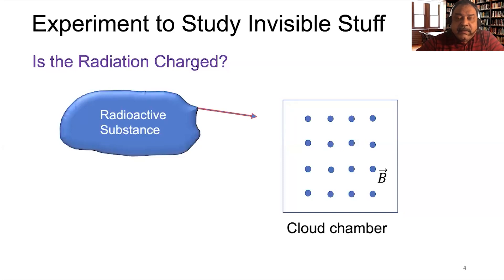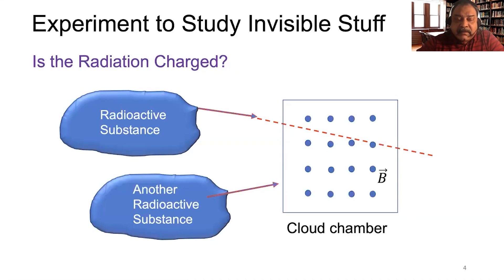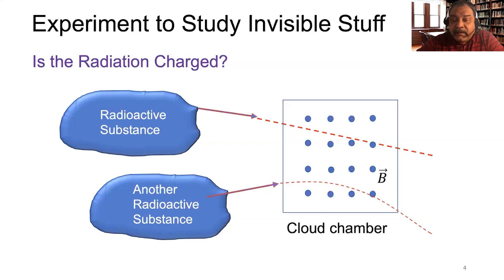Here's a radioactive substance emitting radiation. If this one goes straight through, then we can say that it is not charged. Here's another type of radiation — if this one curves, we can say that it has a charge. In fact, depending on how much it curves, we can say it has more charge, since greater curvature means more force.